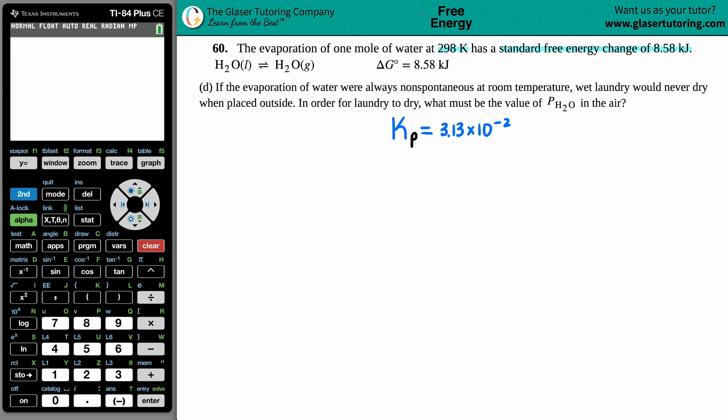Now here comes letter d. It says if the evaporation of water were always non-spontaneous at room temperature, wet laundry would never dry when placed outside. In order for laundry to dry, what must be the value of the partial pressure of H2O in the air?